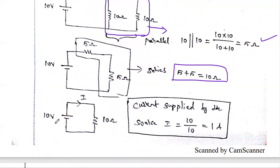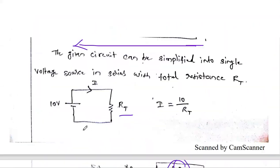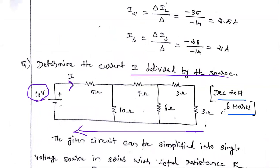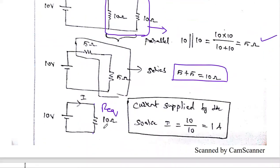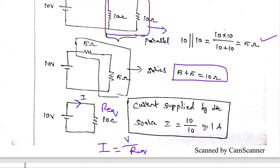Now we have a simple circuit: a 10-volt battery with a total equivalent resistance of 10 ohms. We simplified this lengthy circuit into a single resistance. Using Ohm's law, the current I equals voltage divided by resistance — 10 divided by 10 — giving 1 amp. We solved this problem using the series-parallel combination method. Next, we solve the same problem using mesh analysis.